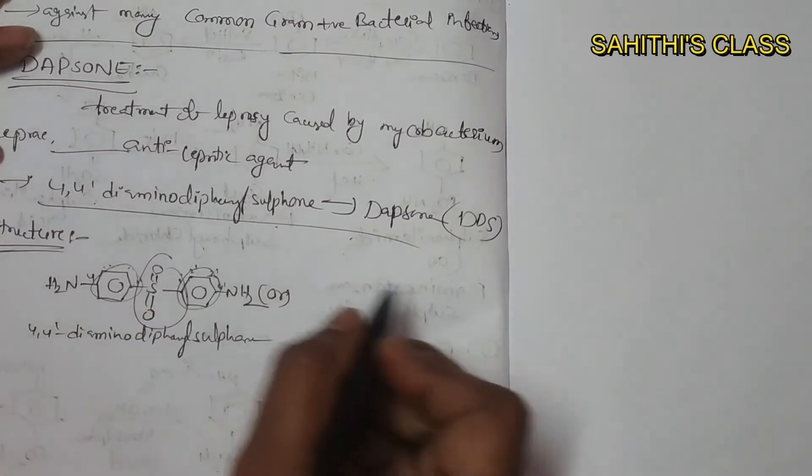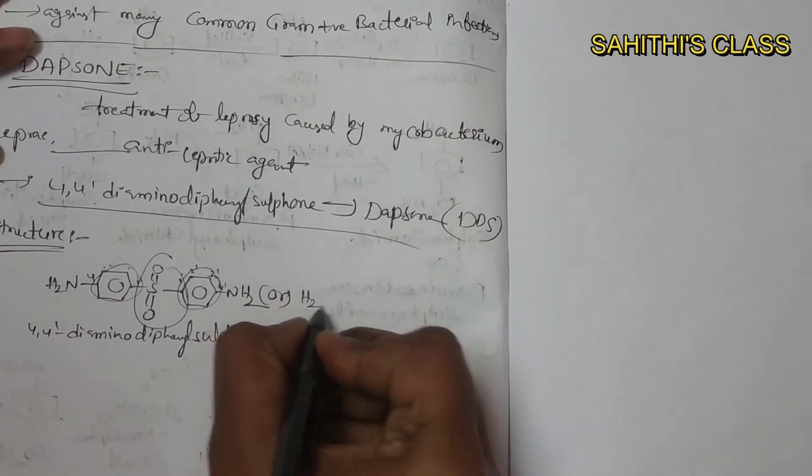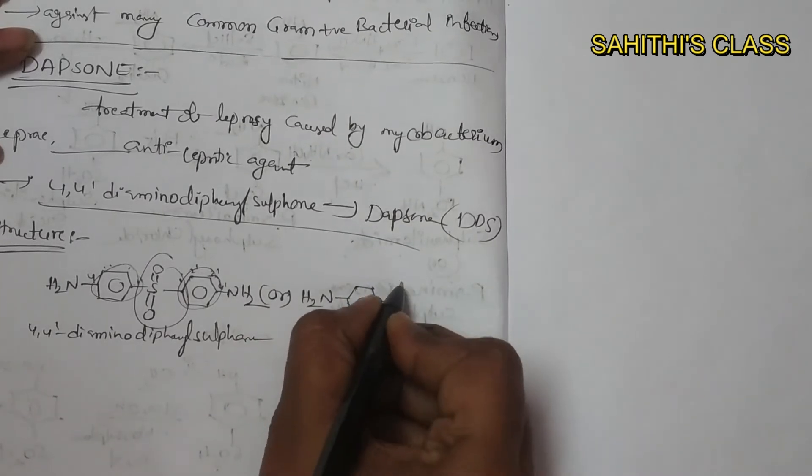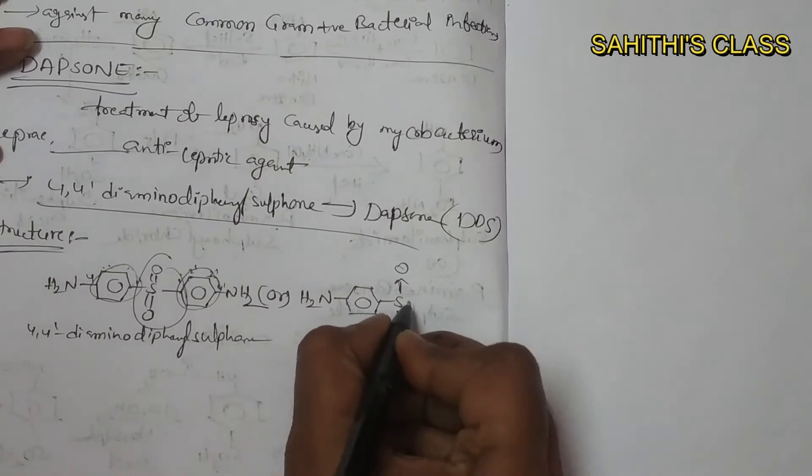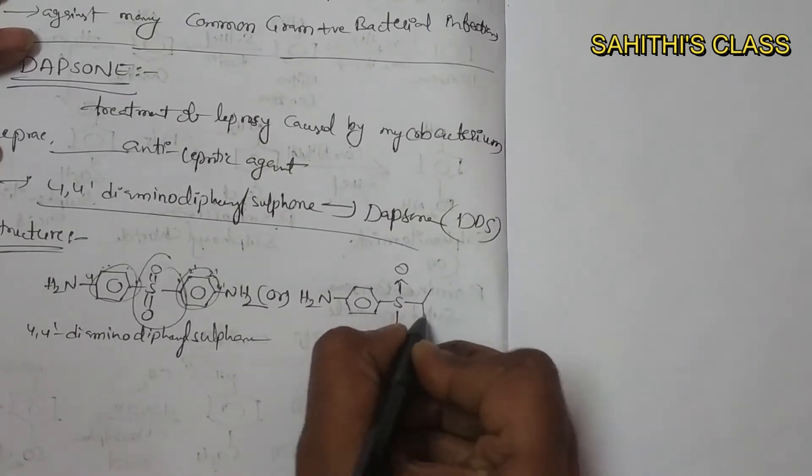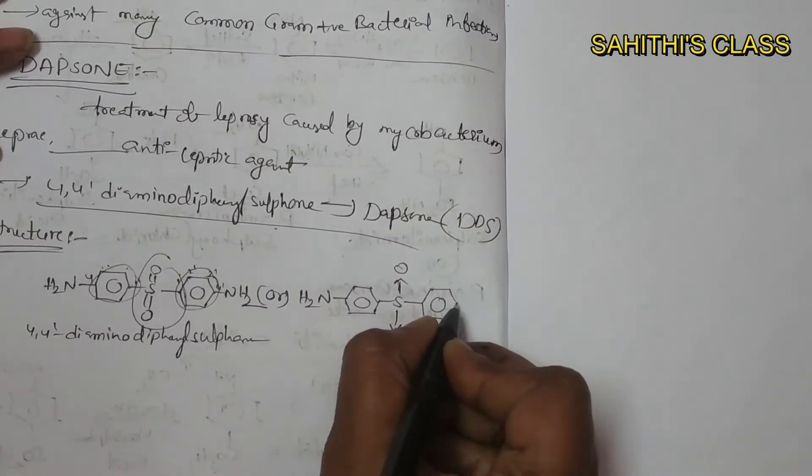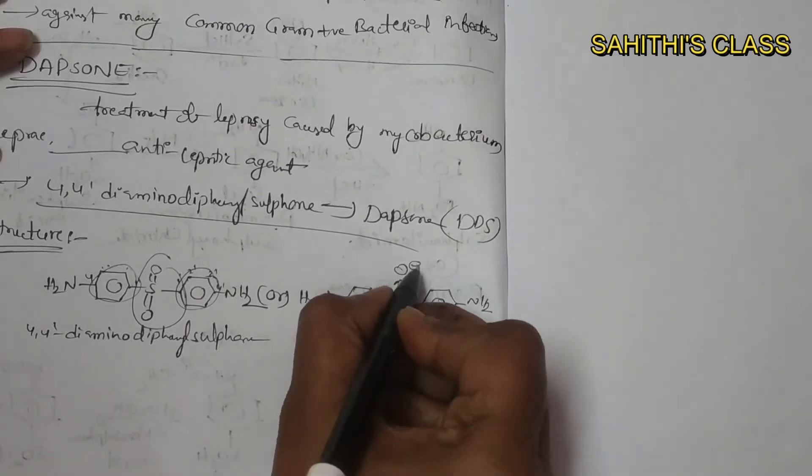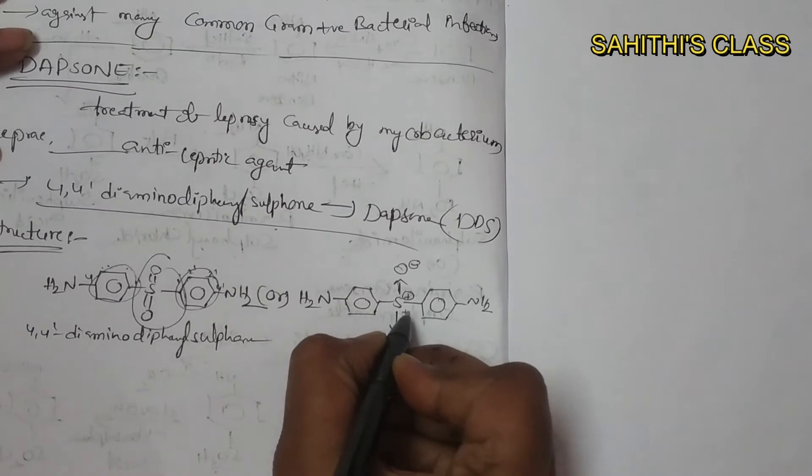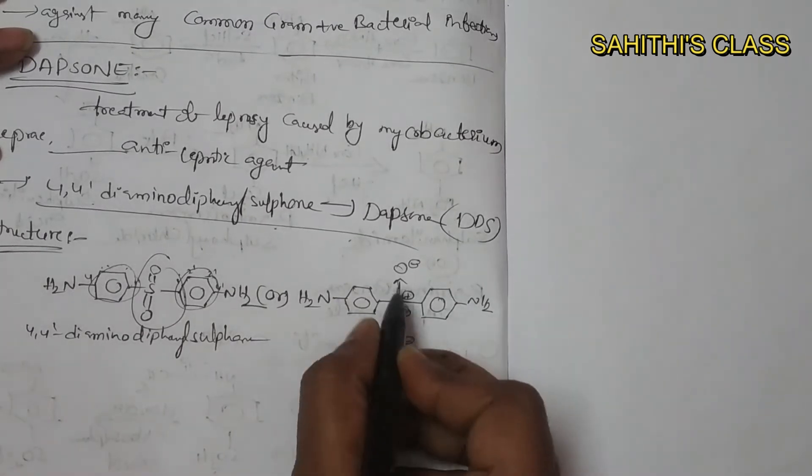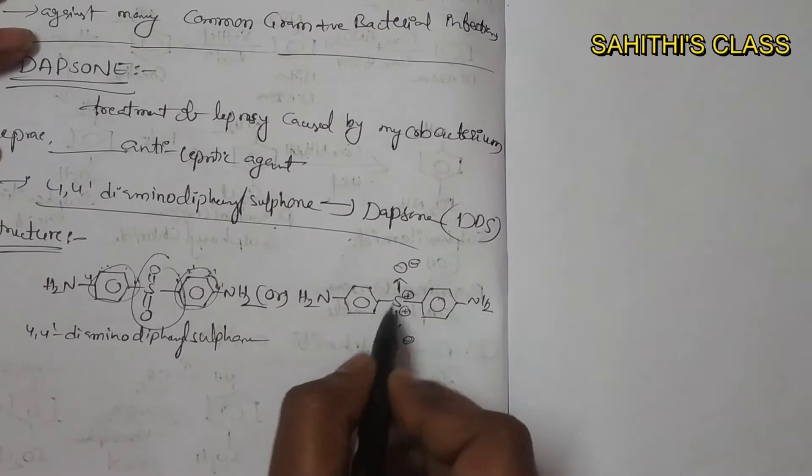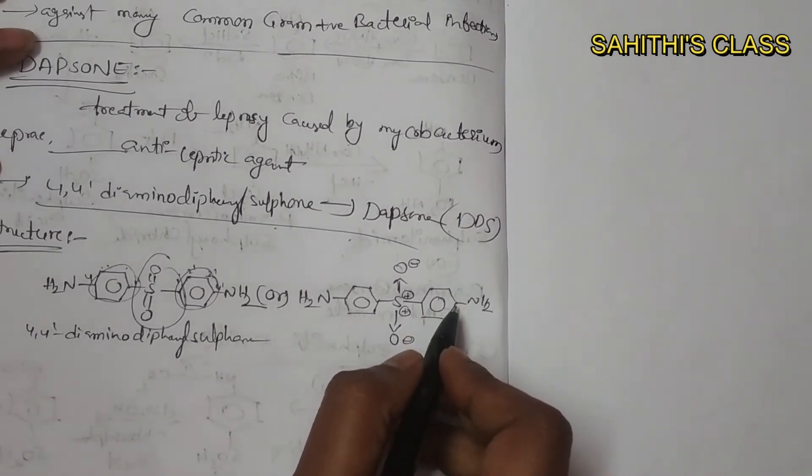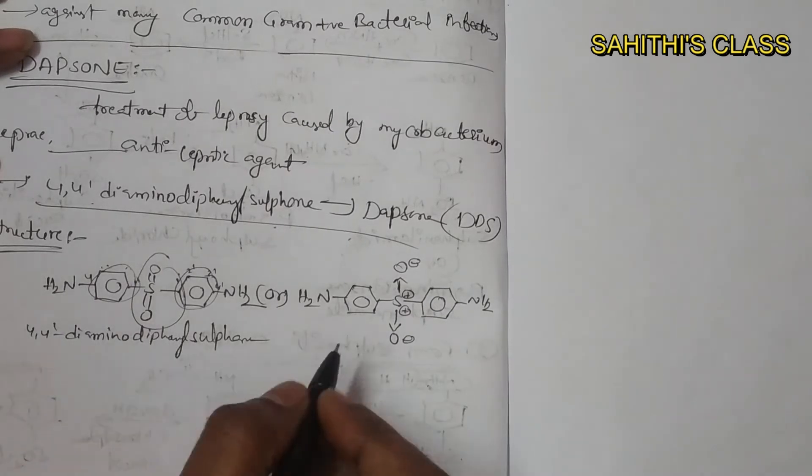So here sulfur exhibits six bonds sometimes. So that's why here I will write only two bonds. So these two bonds I will switch. Now here we have coordinate bonds. So coordinate bound will have negative charge and it has positive charge and it has negative charge. So that's why I'll write coordinate bonds here with the positive and negative charges. So this is also equal to dapsone.